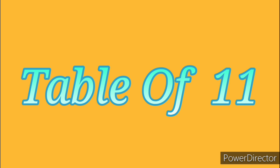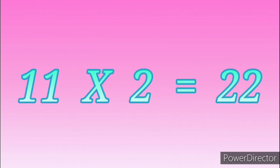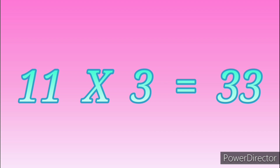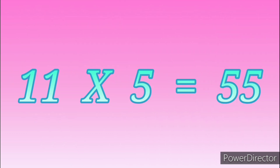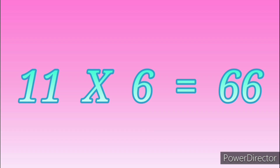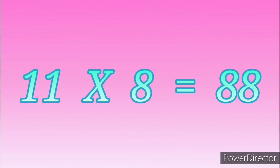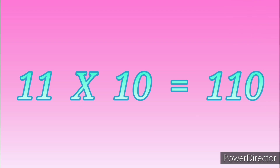Table of Eleven: 11 ones are 11, 11 twos are 22, 11 threes are 33, 11 fours are 44, 11 fives are 55, 11 sixes are 66, 11 sevens are 77, 11 eights are 88, 11 nines are 99, 11 tens are 110.